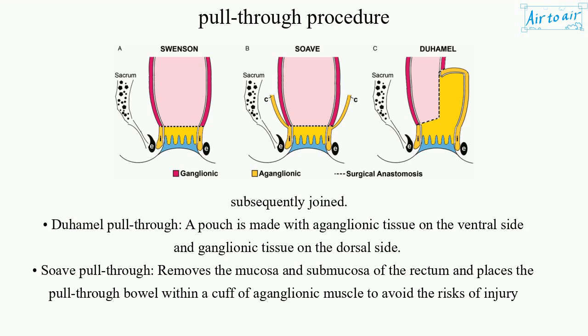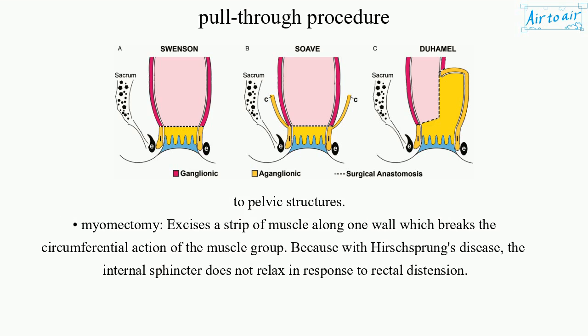Duhamel pull-through: A pouch is made with aganglionic tissue on the ventral side and ganglionic tissue on the dorsal side. Soave pull-through: Removes the mucosa and submucosa of the rectum and places the pull-through bowel within a cuff of aganglionic muscle to avoid the risks of injury to pelvic structures.